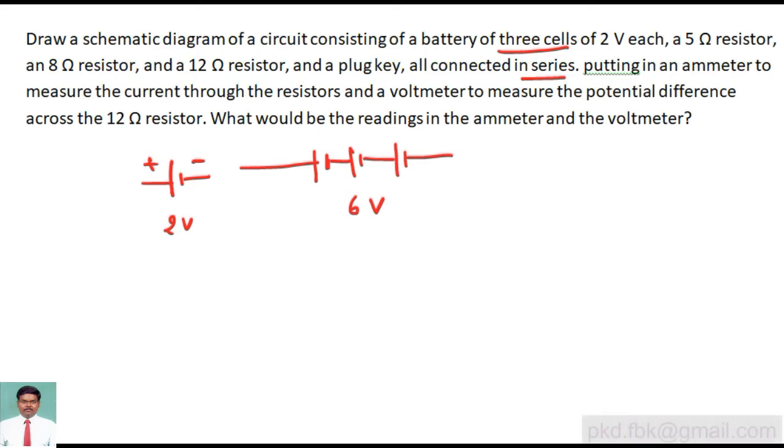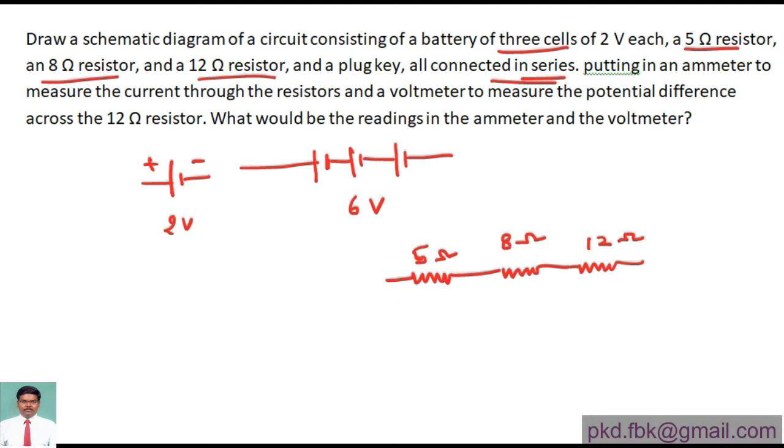Now we draw the diagram. We have a five ohm resistor, eight ohm resistor, and a twelve ohm resistor, also connected in series. So first I'm taking the five ohm resistor, then eight ohm resistor, and twelve ohm resistor - they're all connected in series with a plug key. These are connected to a battery of voltage six volts, and then in series we are connecting an ammeter.